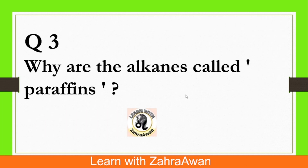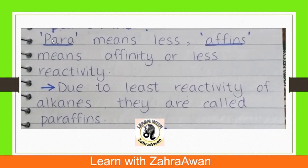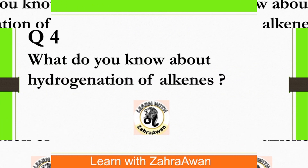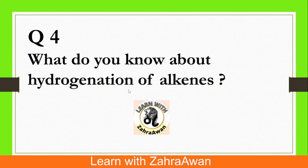Question number 3: Why are alkanes called paraffins? 'Para' means less, and 'affinity' refers to reactivity. Alkanes are hydrocarbons which have very low chemical reactivity, so they are called paraffins. This low reactivity is the reason we call alkanes paraffins.